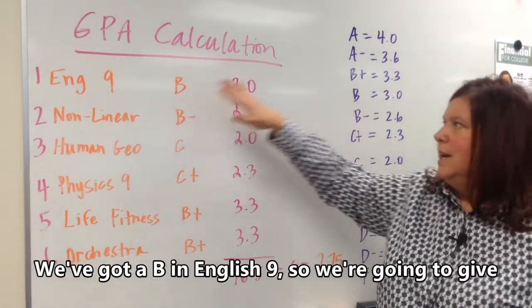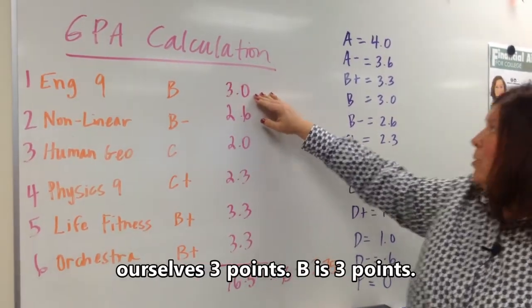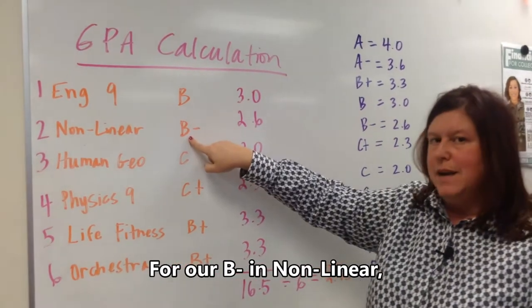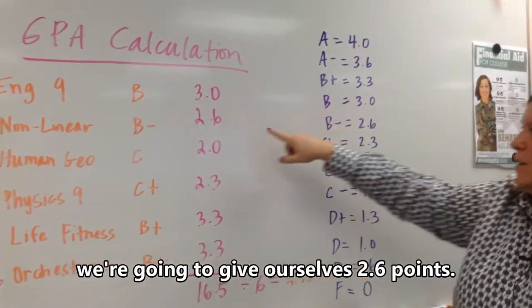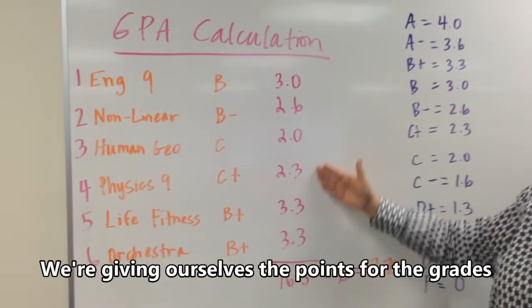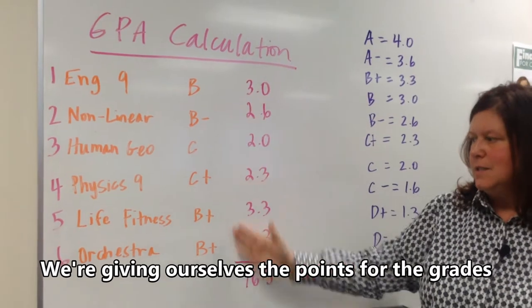We got a B in English 9, so we're going to give ourselves 3 points. B is 3 points. For our B-minus in Non-Linear, we're going to give ourselves 2.6 points, and so on. So we're giving ourselves the points for the grades that we earned.